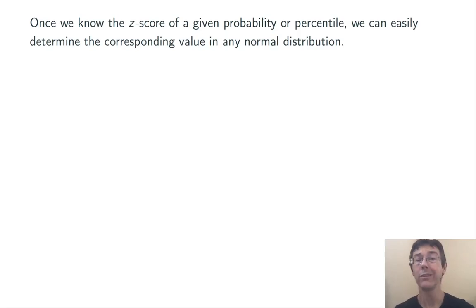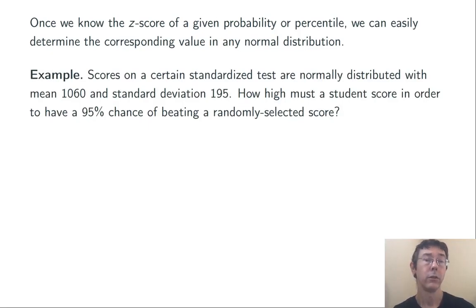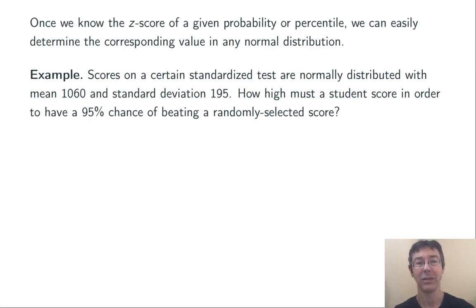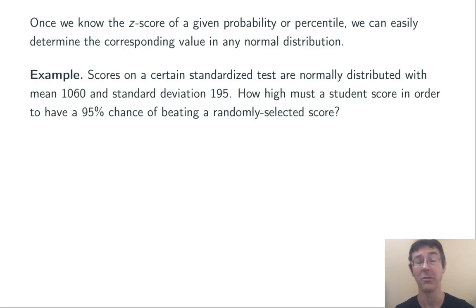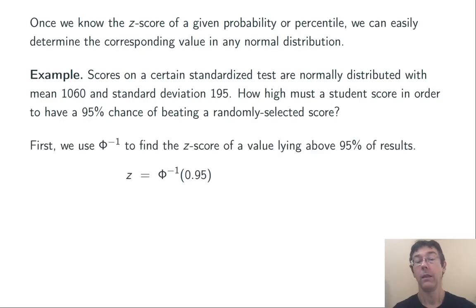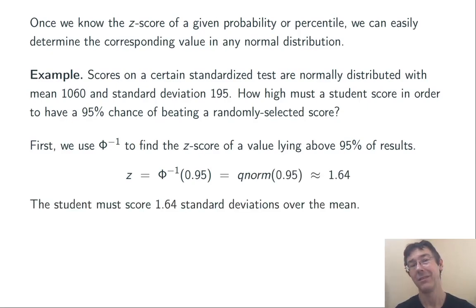Once we know the z-score of a given probability or percentile, we can easily determine the corresponding value in any normal distribution. For example: scores on a certain standardized test are normally distributed with mean 1060 and standard deviation 195. How high does a student have to score to be above 95% of the scores? We first find the 95th percentile z-score: phi inverse of 0.95, which is qnorm(0.95), gives about 1.64.